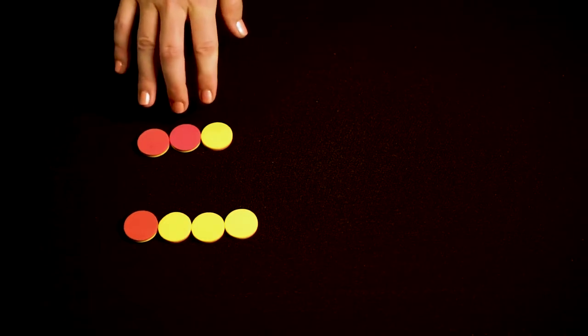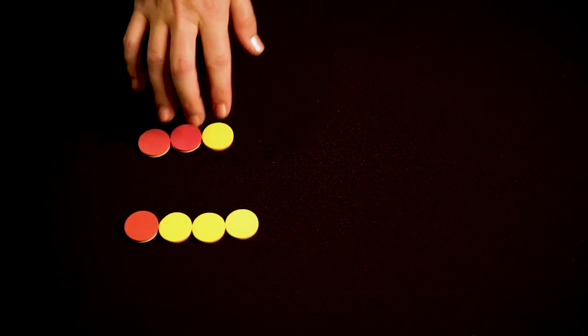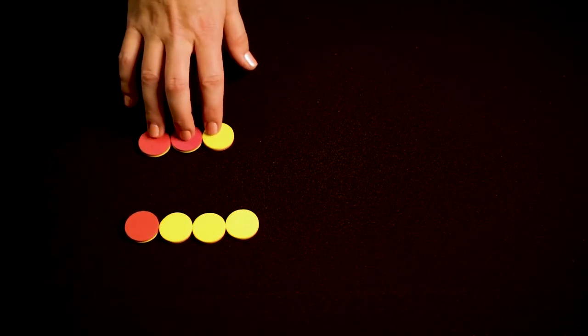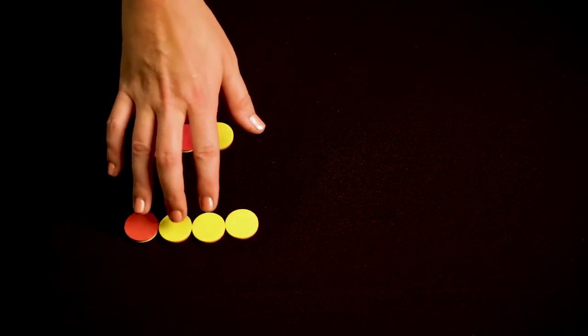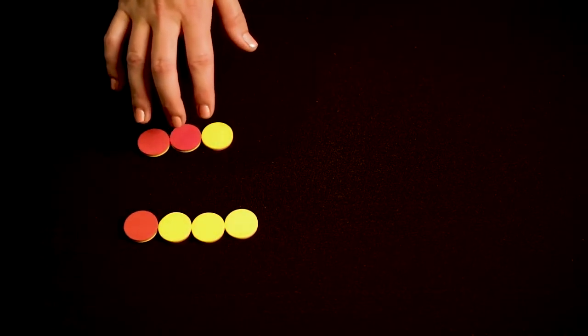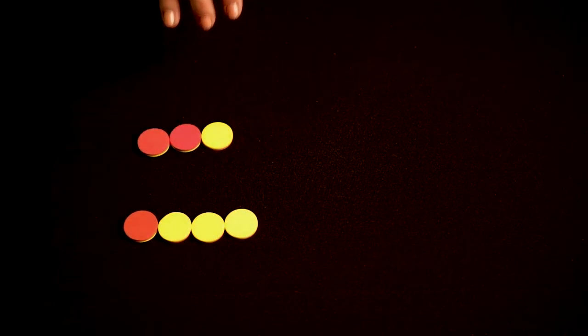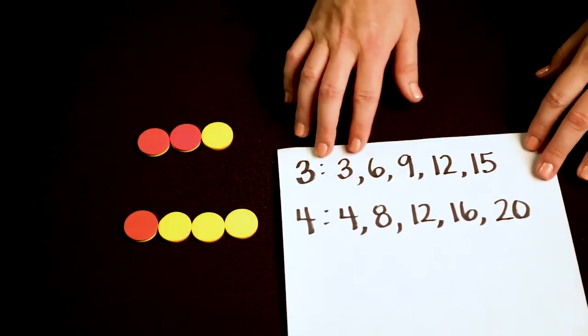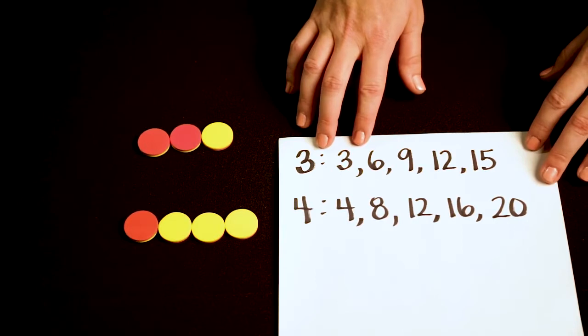First, let's look at the denominator that is less to see if it's a factor of the greater denominator. No, 3 is not a factor of 4 and 4 cannot be divided by 3 and equal a whole number. So we have to write out the multiples of each to find the least common multiple.